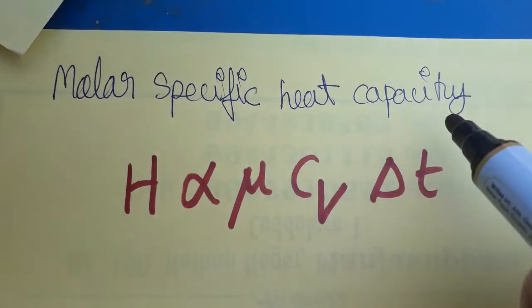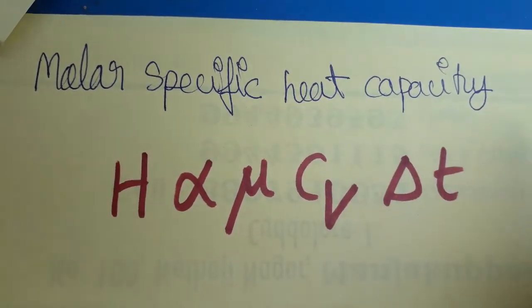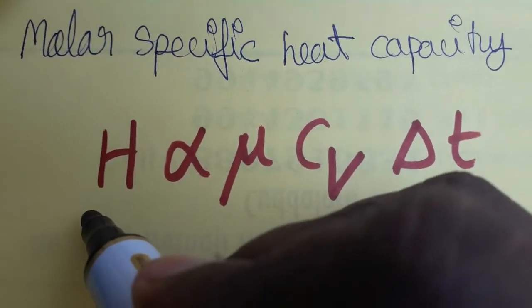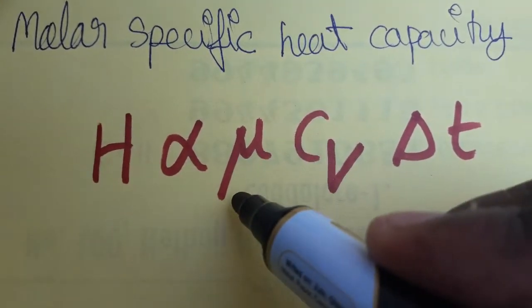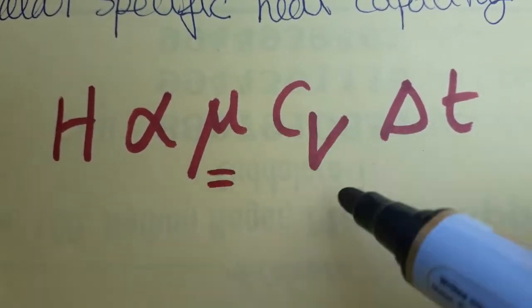Today we are going to see how to find the SI unit and dimensional formula for molar specific heat capacity. Molar specific heat capacity is specific heat capacity where instead of mass we are going to take it as molar mass. Heat is directly proportional to molar mass.